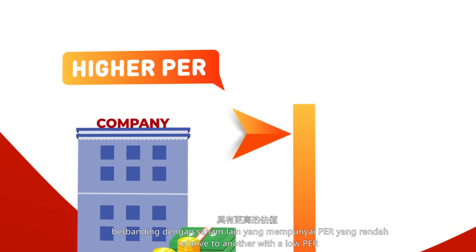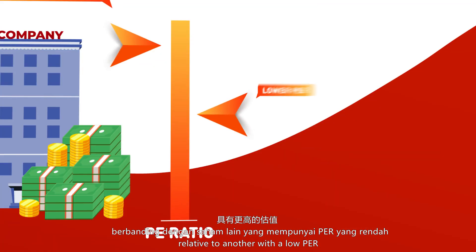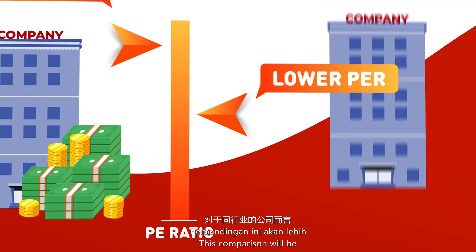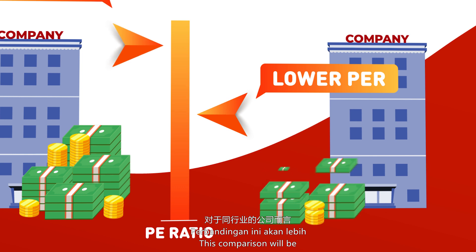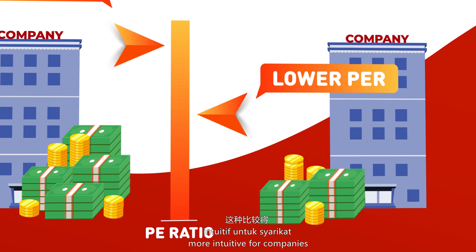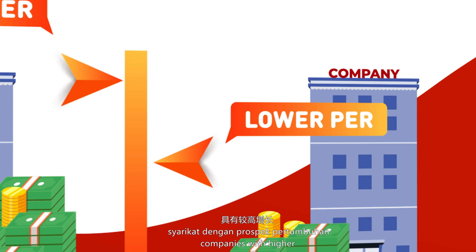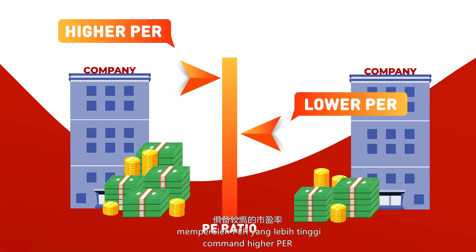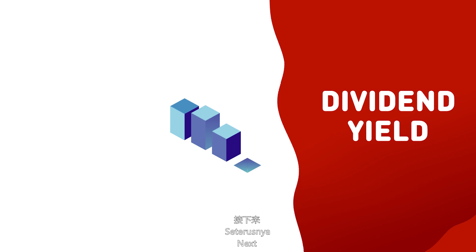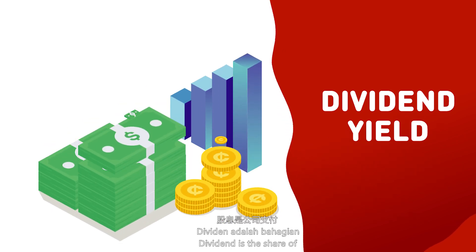A high PER usually suggests a stock has a higher valuation relative to one with a low PER. This comparison is more intuitive for companies within the same industry. Companies with higher growth prospects normally command a higher PER.